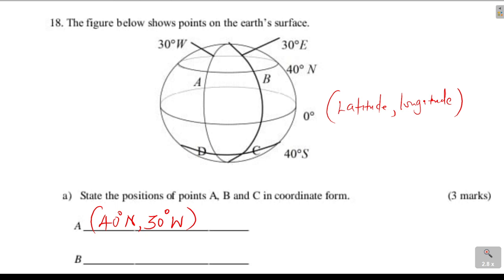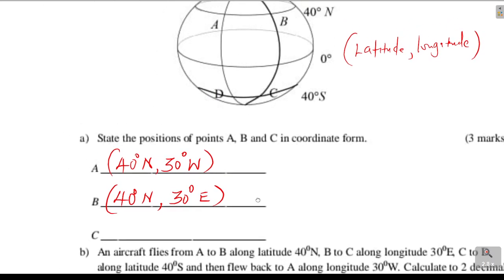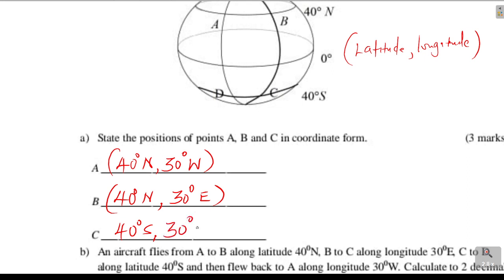Let's go to B. B is located on latitude 40 degrees north, and the longitude is 30 degrees east. Then we go to C. C is located on latitude 40 degrees south and longitude 30 degrees east. So those are the positions of A, B, and C in coordinate form.